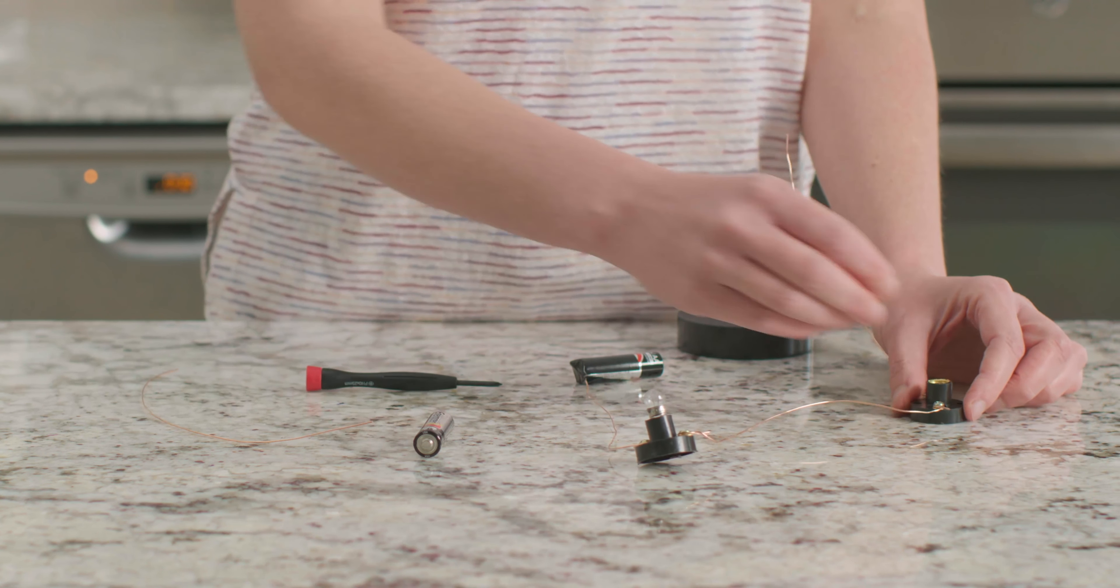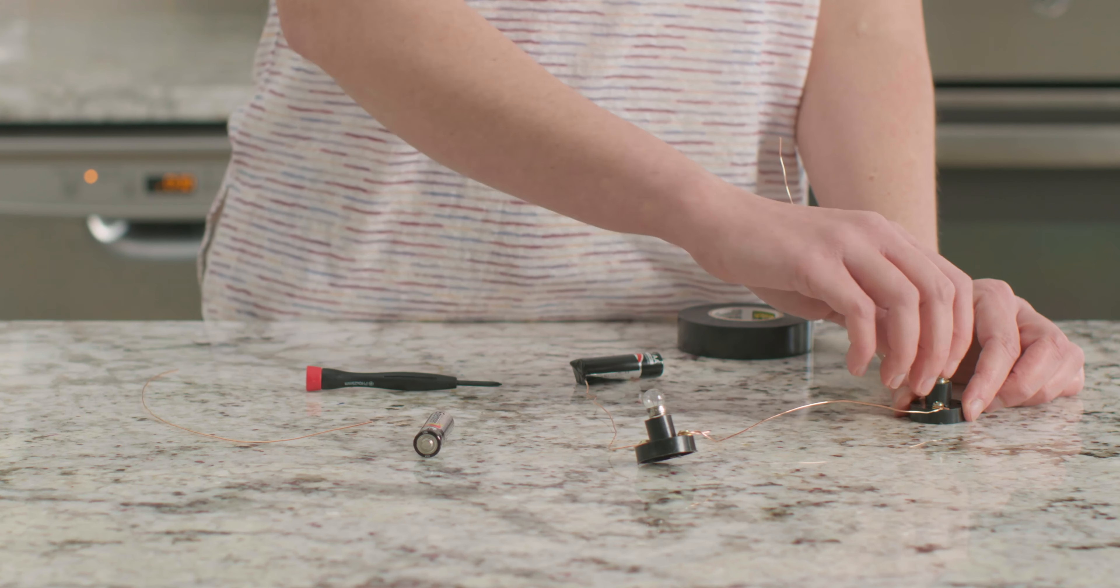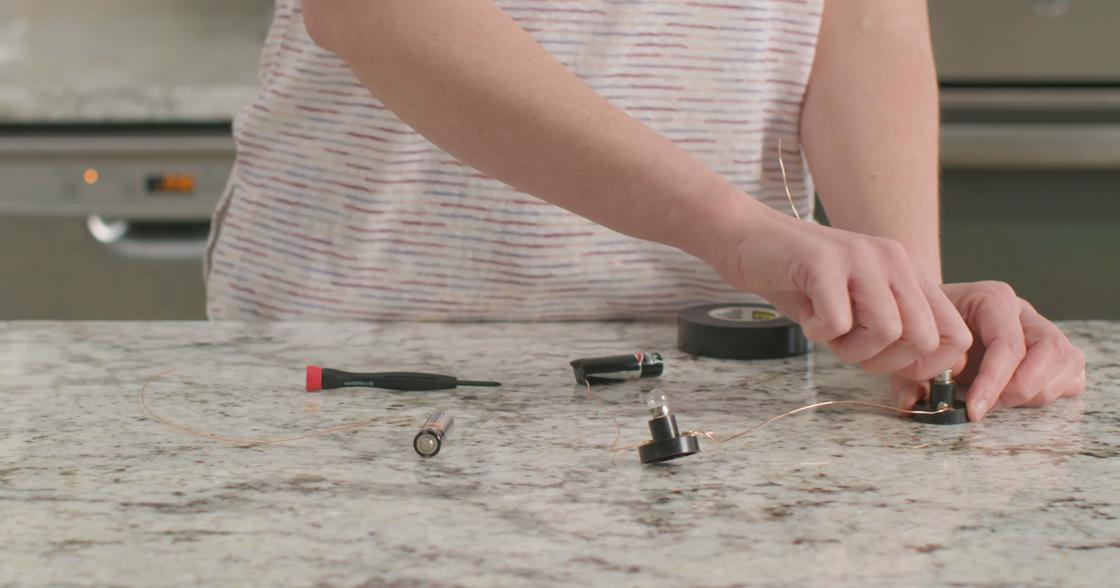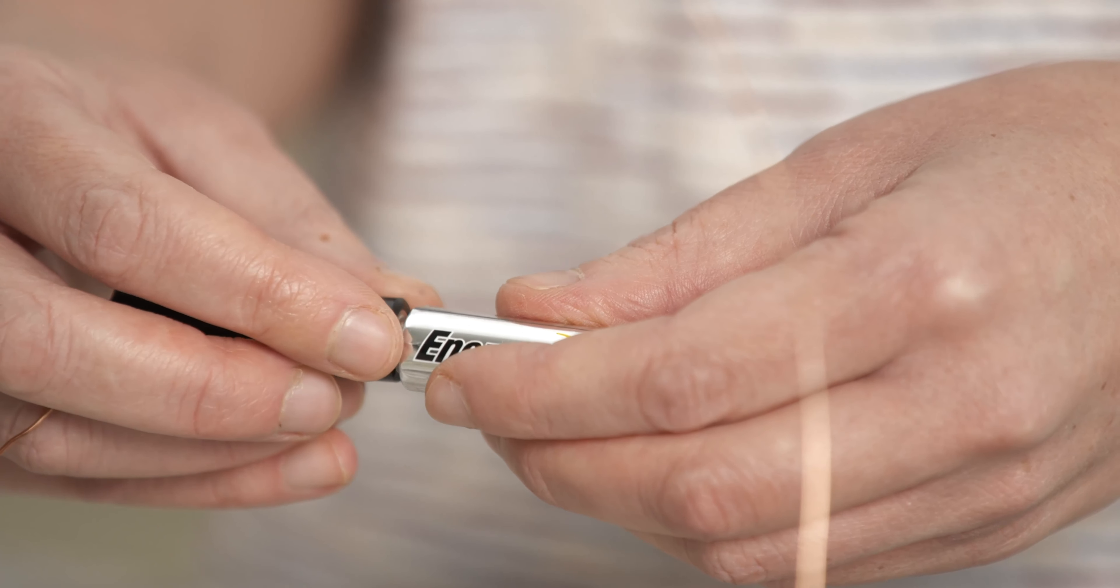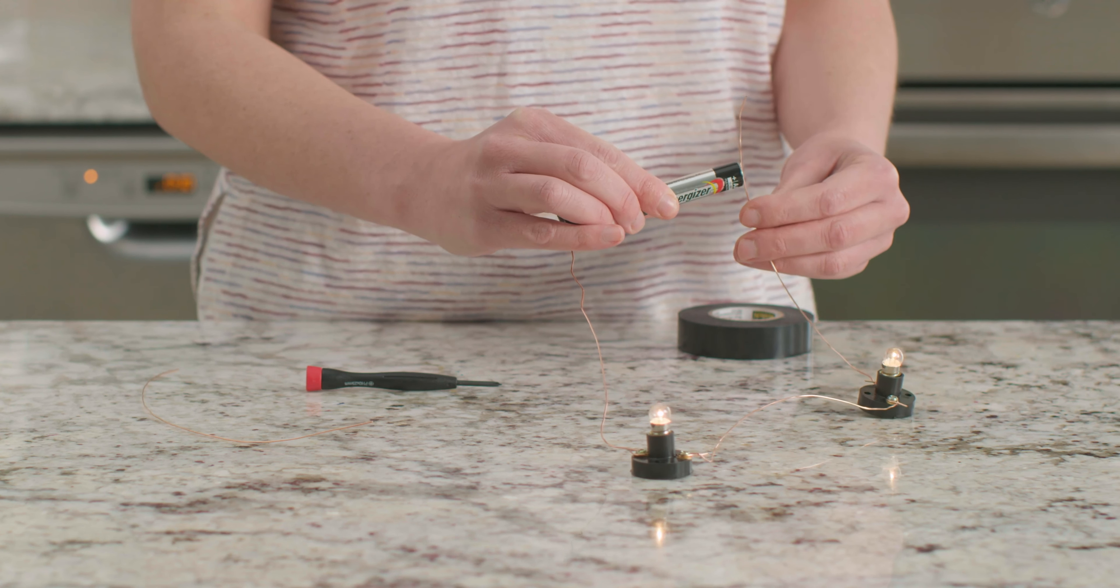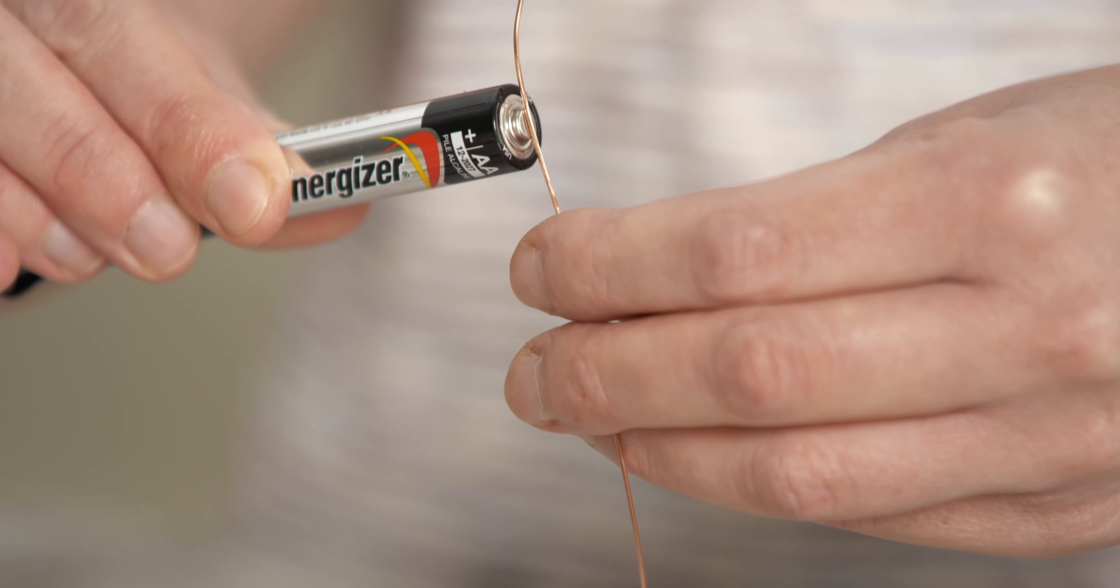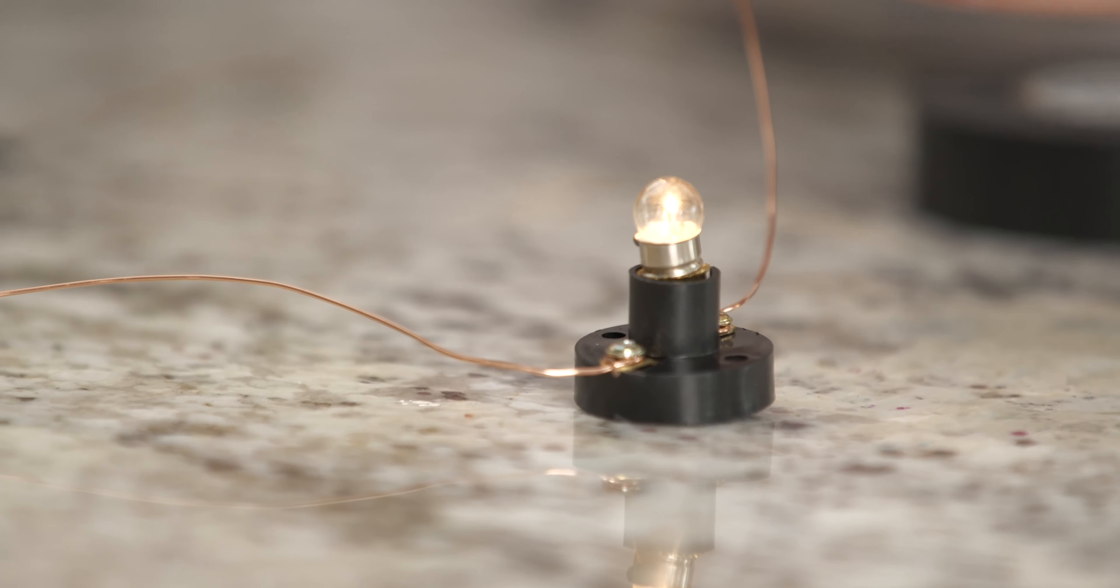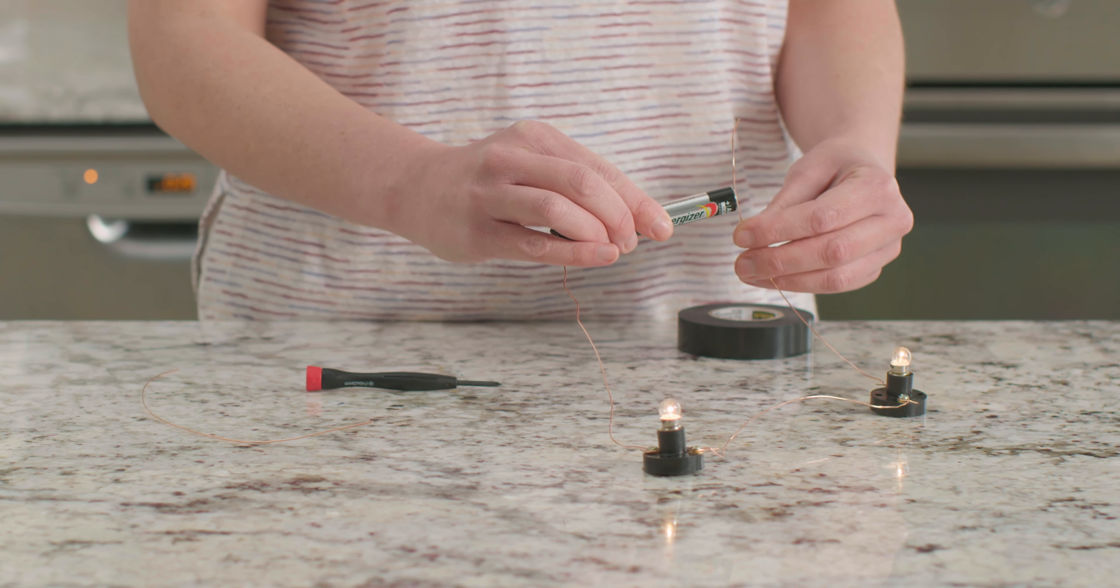Now let's see if adding another battery to our circuit makes the lights brighter. I'm going to place the negative end of this battery against the positive end of our current battery. Now let's touch our loose wire to the positive end of our new battery. What do you think? Is the light brighter or dimmer with two batteries?